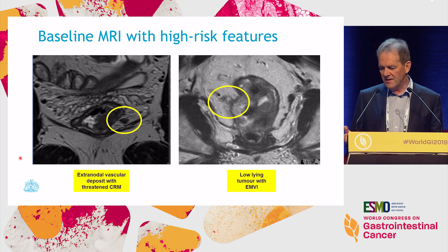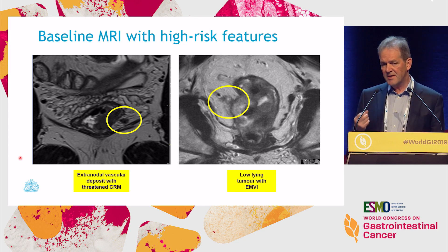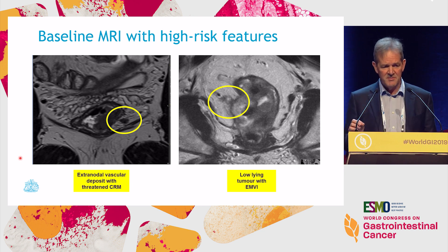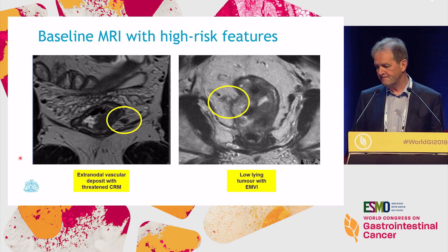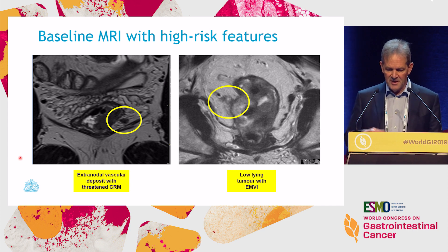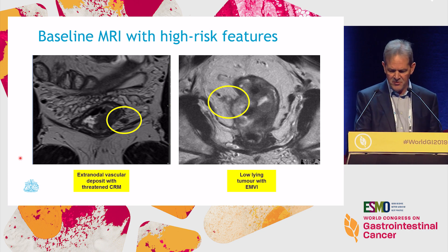Here is a good example of an extranodal vascular deposit with a threatened CRM. This sort of patient is at high risk for both local failure and systemic failure. And this is another example of a tumor with extramural venous invasion — again, predictive of local failure and systemic relapse.